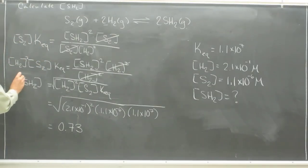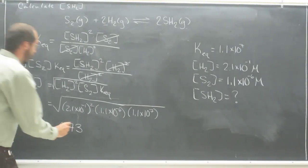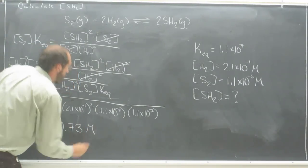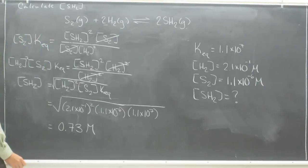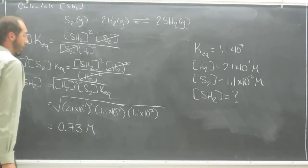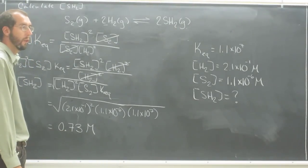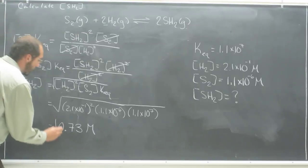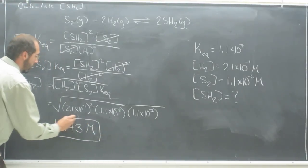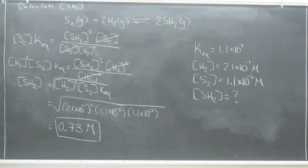And you've got to remember that since this is in brackets, that it means molar concentration. So it's going to be 7.73 molar. And again, if you wanted to put that 7.3 times 10 to the negative 1 molar, you're okay in doing that. But that's your final answer.